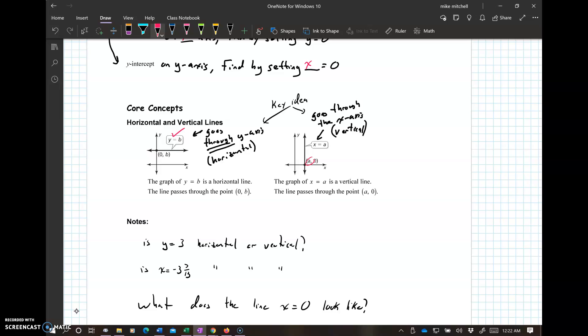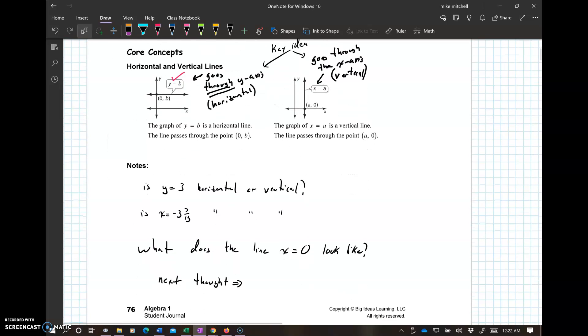Notice the points it's going through on here. That's what we call the x-intercept. That's what we call the y-intercept right there. So remember that y equals, it's not parallel to the y-axis. It goes through the y-axis. X equals not parallel to the x. It goes through it.